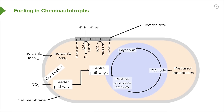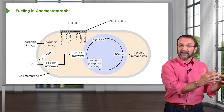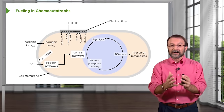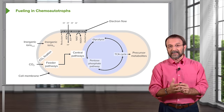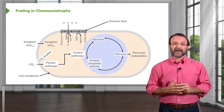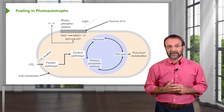So remember, in comparison, the heterotrophs have to import the precursor molecules that they need, whereas these chemoautotrophic bacteria can synthesize them on their own.